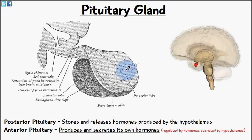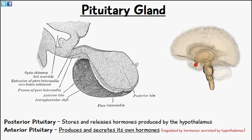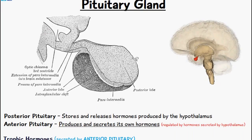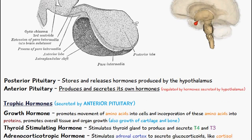Welcome to 5-Minute School. In today's video we're going to be talking about the pituitary gland. I want to focus on the hormones produced by the anterior and posterior pituitary, and in the next few videos I'll focus on its hypothalamic control. We have the pituitary gland located here — in this diagram you can see it's highlighted in red. Here we have the posterior lobe and here we have the anterior lobe.